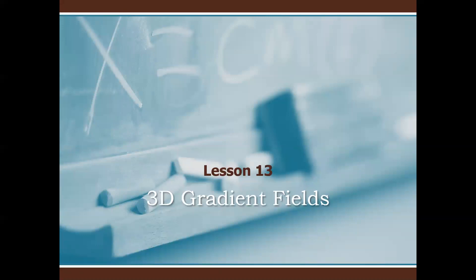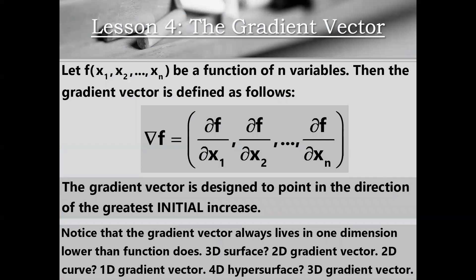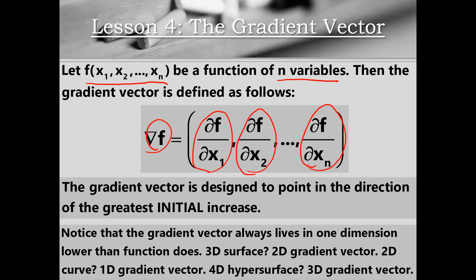Thanks for tuning in to my last video for this course. We're going to talk about gradient fields in three-dimensional space. A good place to start is to remind everybody about the definition of a gradient vector. If we have a function f of x1 through xn, a function of n variables, then its gradient is defined as del f equals (df/dx1, df/dx2, all the way up to df/dxn). The gradient vector is designed to point in the direction of greatest initial increase for our function f.